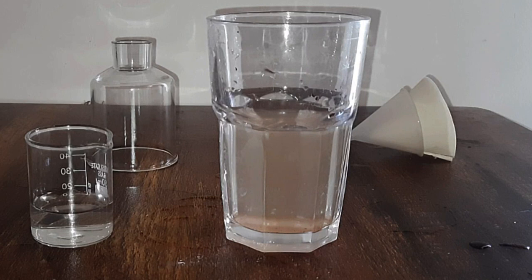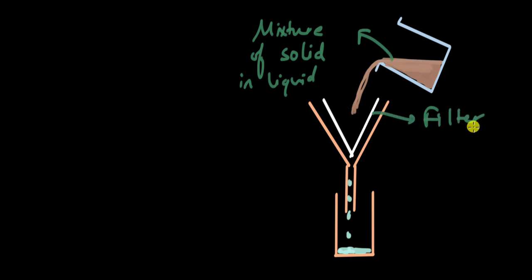Now let's have a look at the diagram. This is the mixture of solid and liquid. It could be anything - chalk in water, for example, which also doesn't dissolve. When you pour this mixture onto this filter paper, this right here is the filter paper.